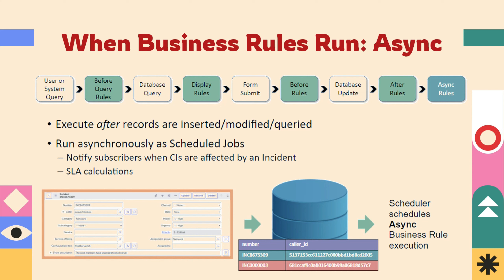The async business rule executes after records are inserted, modified, or queried. It runs asynchronously as scheduled jobs. For example, we can notify subscribers when CIs are affected by an incident, or for SLA calculations and other complex server-side calculations. When complex calculations are happening on server execution, we can use async business rules so that existing work on the current form is not impacted.